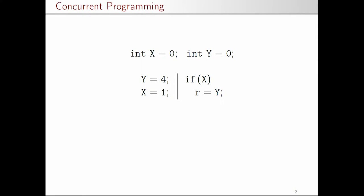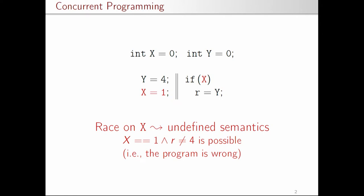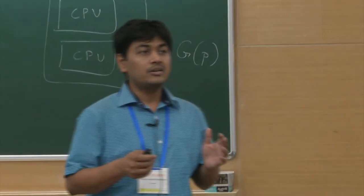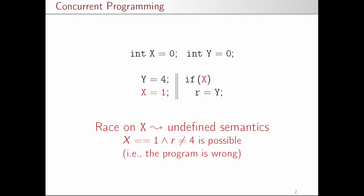However, note that there is a data race on variable X, and as a result, according to C semantics this program's behavior is undefined because there is a race. The definition of a race is when there are concurrent accesses on a particular location and at least one of the accesses is a write operation. So C says that even if the value of X equals 1, it is still possible to have R not equal to 4, and hence the program is wrong.